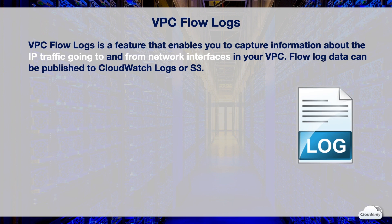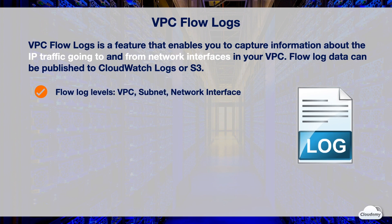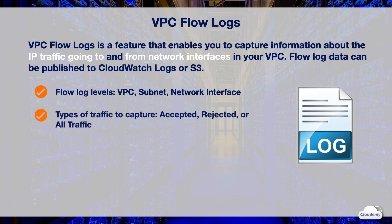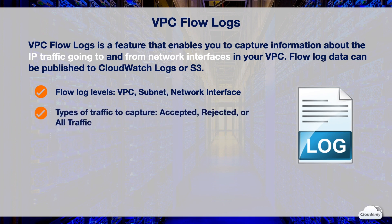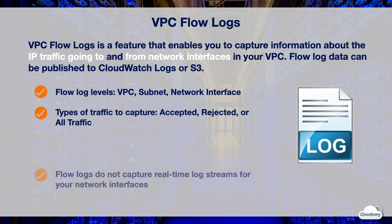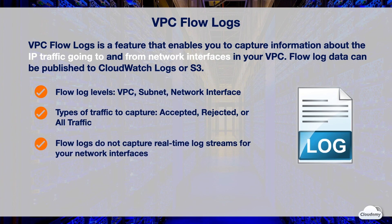You can create a flow log for a VPC, a subnet, or a network interface. If you create a flow log for a subnet or VPC, each network interface in that subnet or VPC is monitored. When you create a flow log, you can specify the type of traffic to capture. The flow log can capture accepted traffic, rejected traffic, or all traffic.